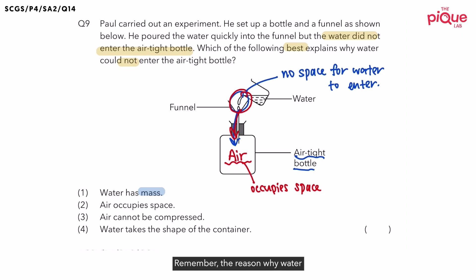Remember, the reason why water could not enter the airtight bottle is simply because there is no more space for the water to enter. So even though we know that statement one is correct, statement one does not explain why water could not enter the airtight bottle. Therefore, statement one is incorrect.